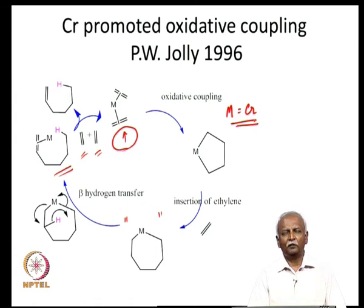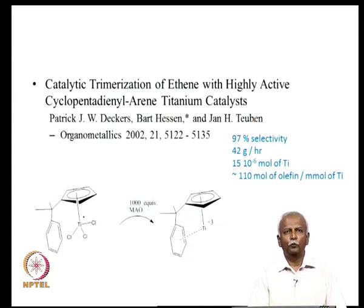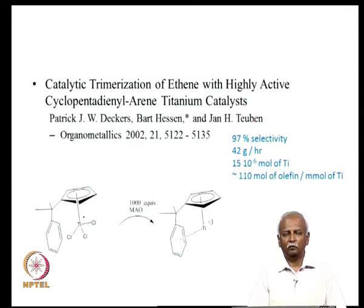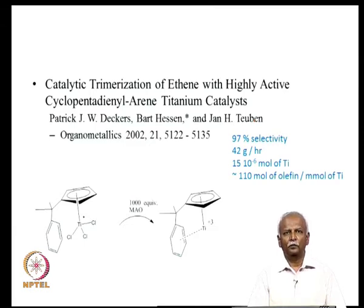The obvious extension would be to proceed to a d4 system, where one would expect tetramerization. However, as late as 2002, it was discovered that titanium does not give tetramerization of ethylene as expected, but instead gives very efficient trimerization of ethylene to generate 1-hexene. In all these cases, we are talking about the formation of 1-hexene, which is the more useful product.